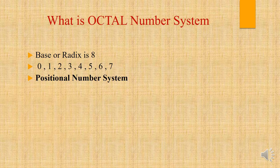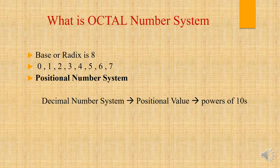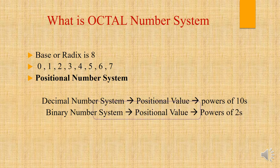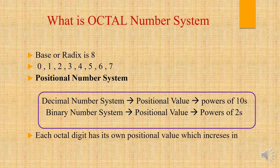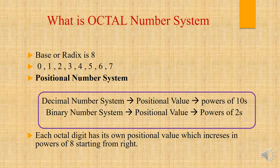In the decimal number system, the positional value increases in powers of 10, and in the binary number system it increases in powers of 2. Similarly, in the octal number system, each octal digit has its own positional value which increases in powers of 8, starting from the right. We will understand this in detail with the next example.